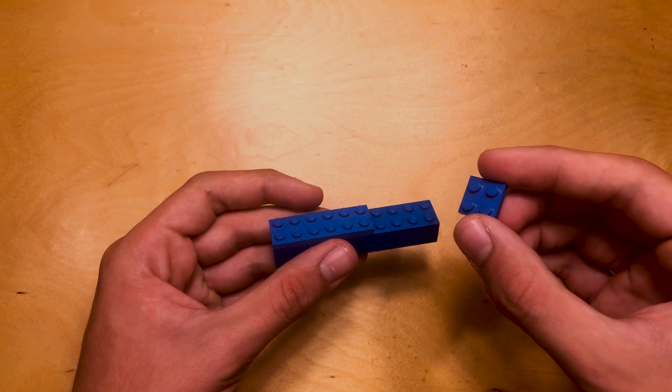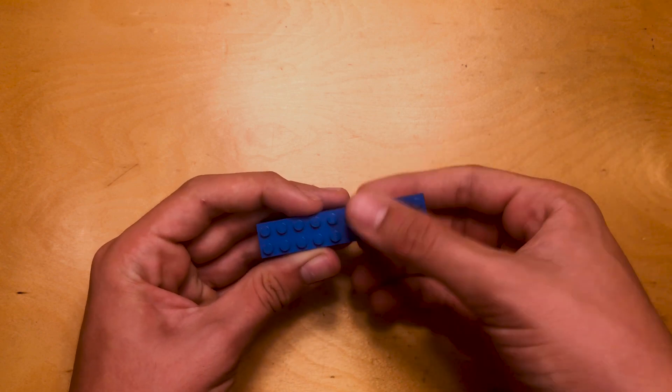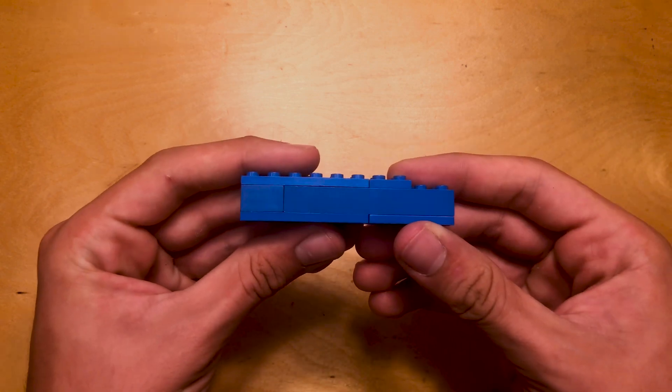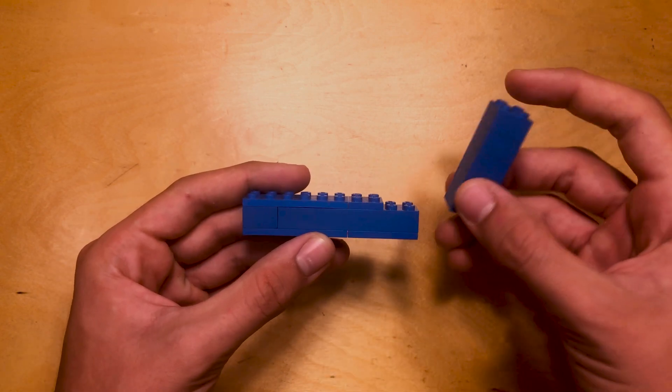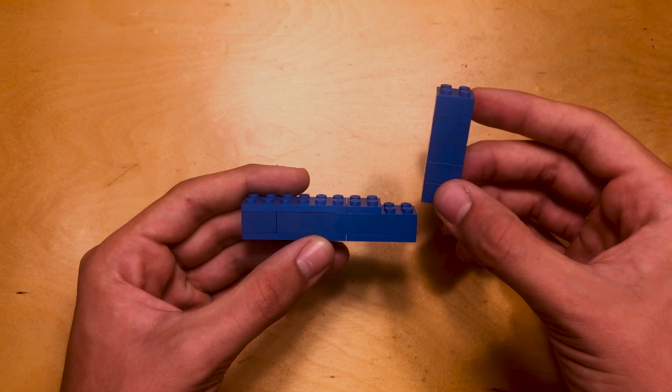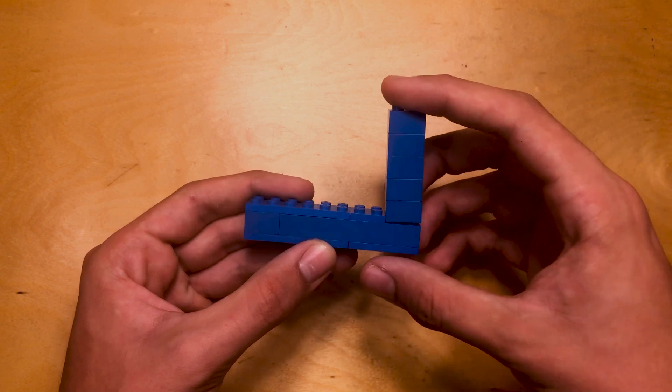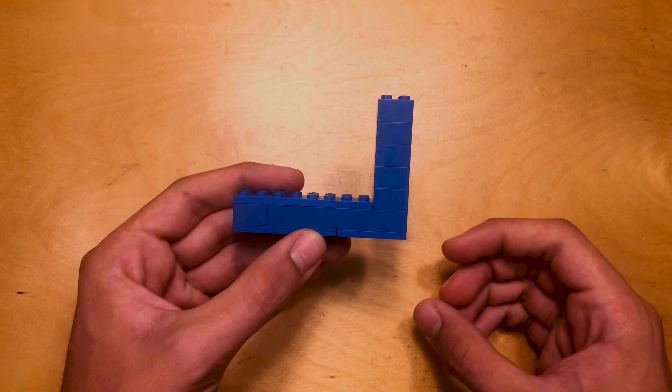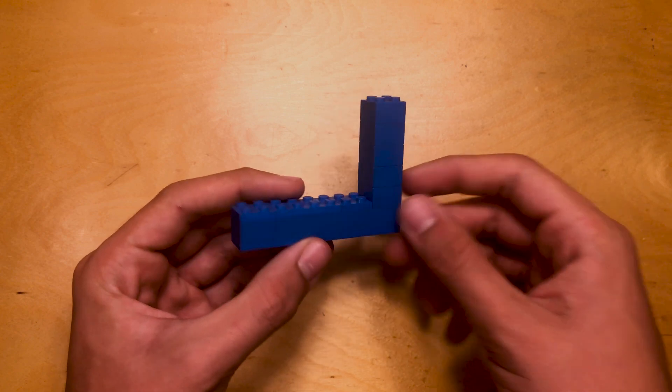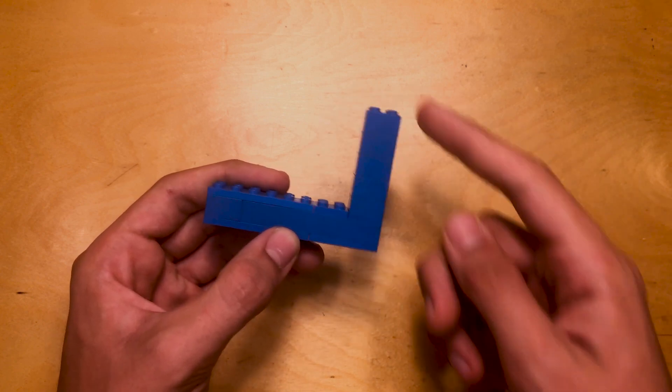Then we're going to take this 2x2 piece and we're going to put it right there. So this is what it's looking like so far. Now, take the rest of the required 2x2 bricks and put them there. So five 2x2 bricks like that. You see how we're building the base? Now we're building the vertical part of it.